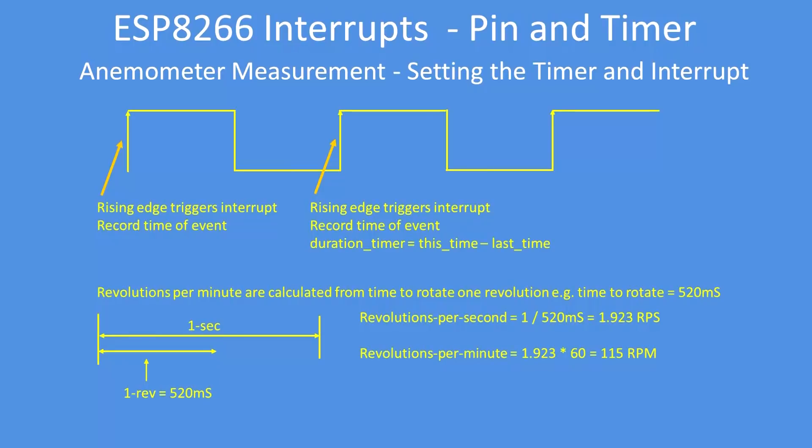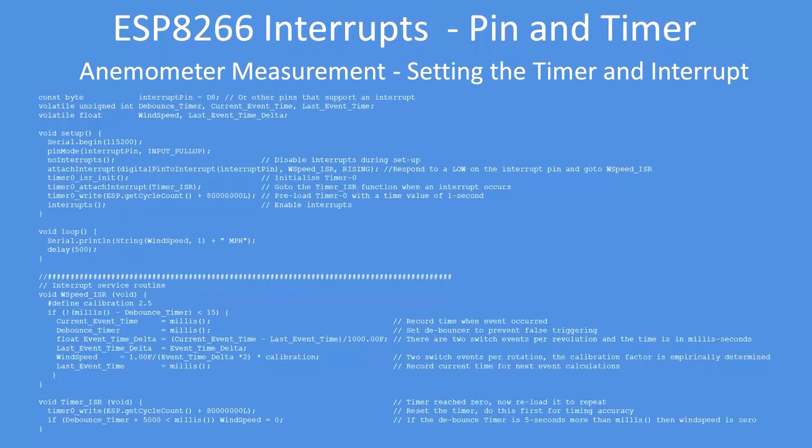This is the code for measuring wind speed. I won't go through the details of the code, but you can find it on GitHub. But as you can see, it's fairly compact, quite short for what it's doing, and interrupts is very efficient at this sort of task.